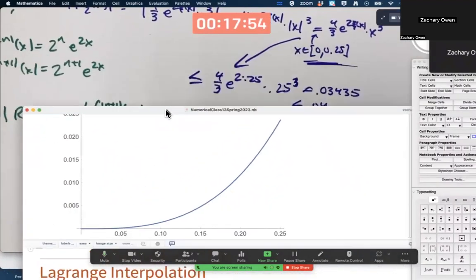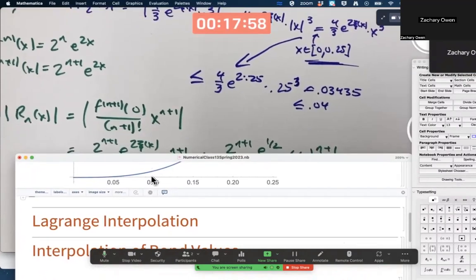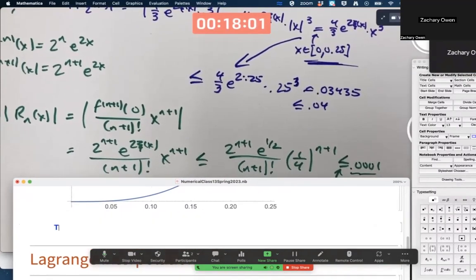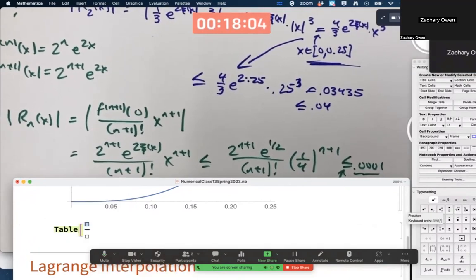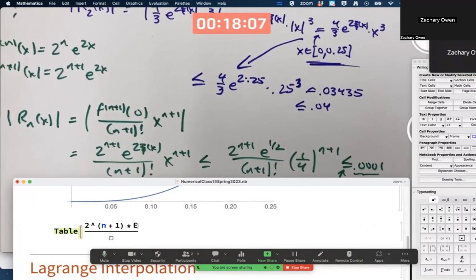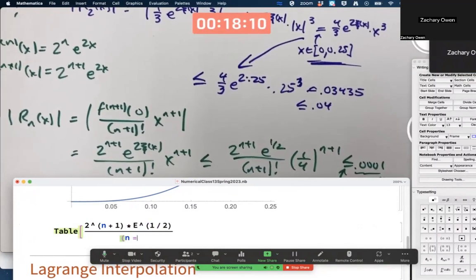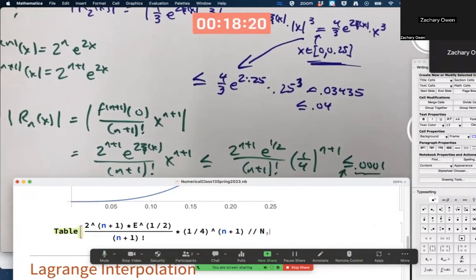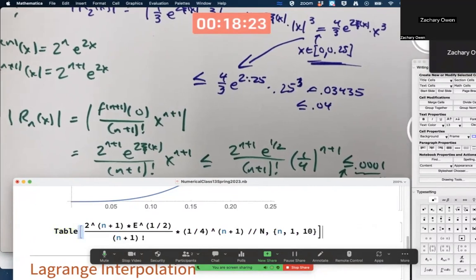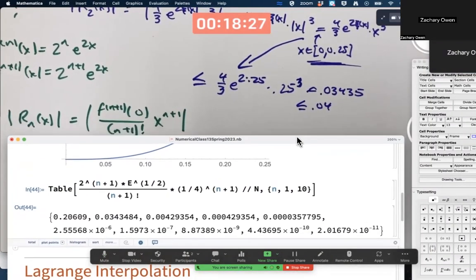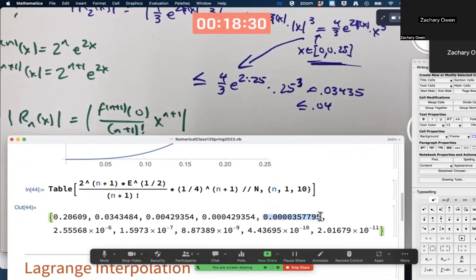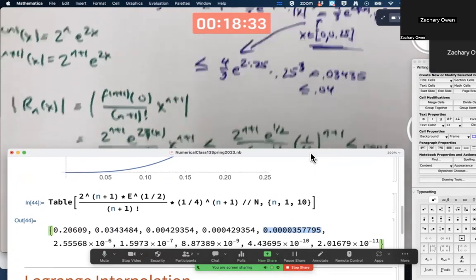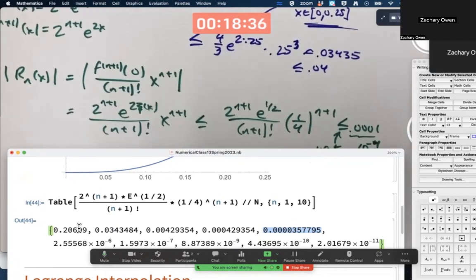Just use technology calculator to figure out how big n should be to make that true. We could make a table of values, for example, of 2 to the n plus 1 times e to the 1 half divided by n plus 1 factorial times 1 fourth to the n plus 1. Numerically approximate it. Let n go from 1 to 10, is probably good enough. By the time we get to this one, we're already less than 10 to the negative 4. And what is that? n is 1 here, then 2, then 3, then 4, then 5. n equals 5 is good enough.